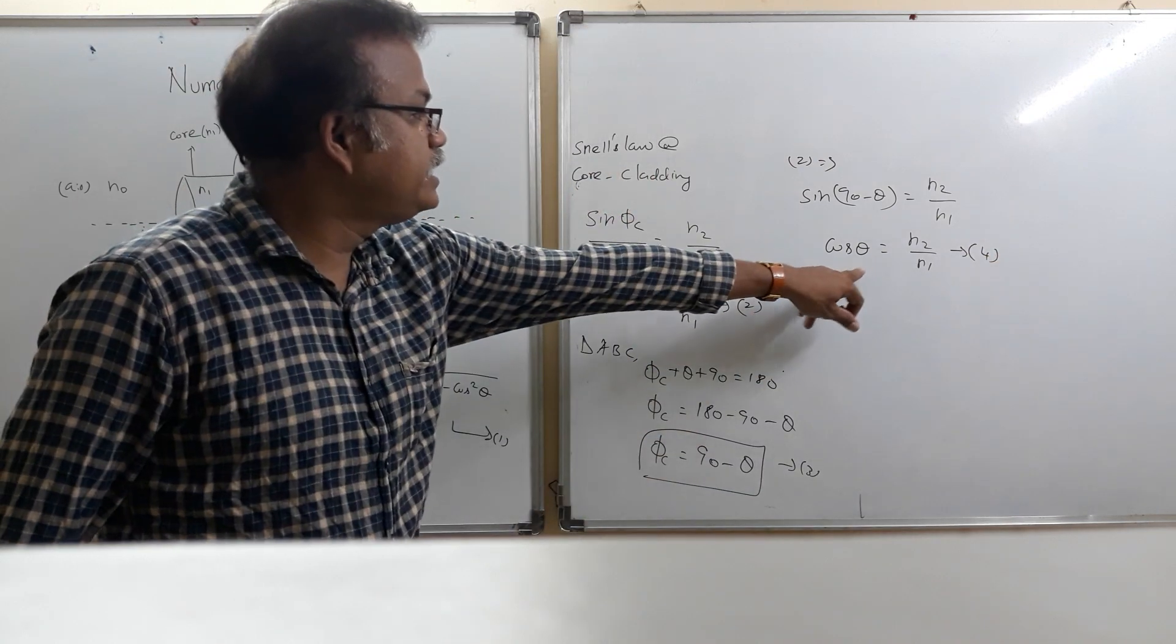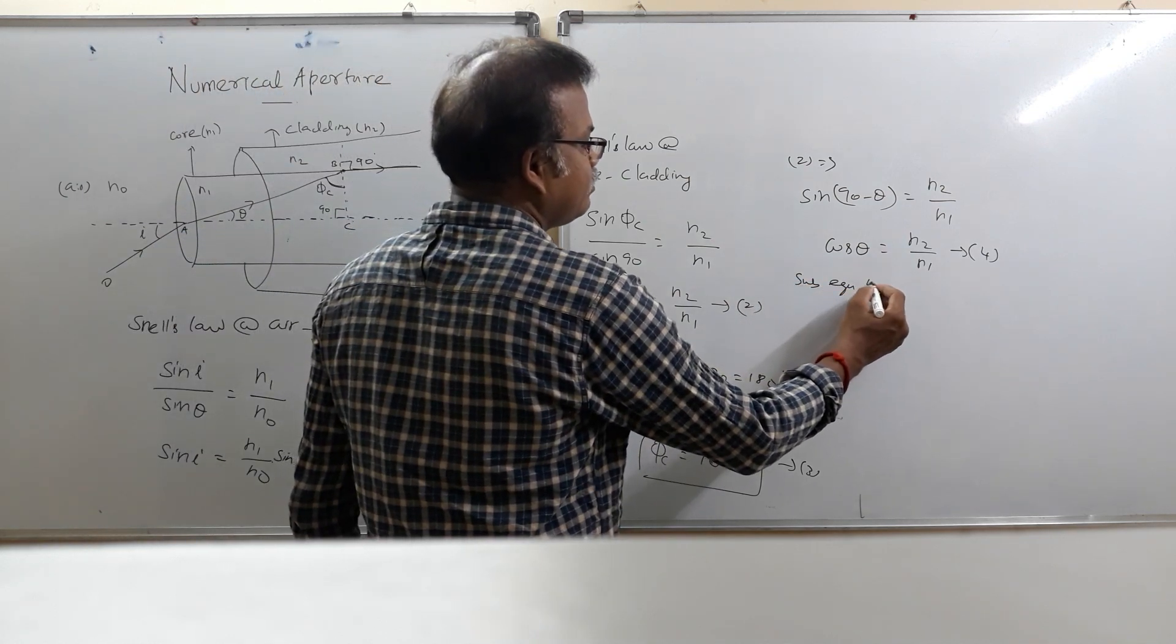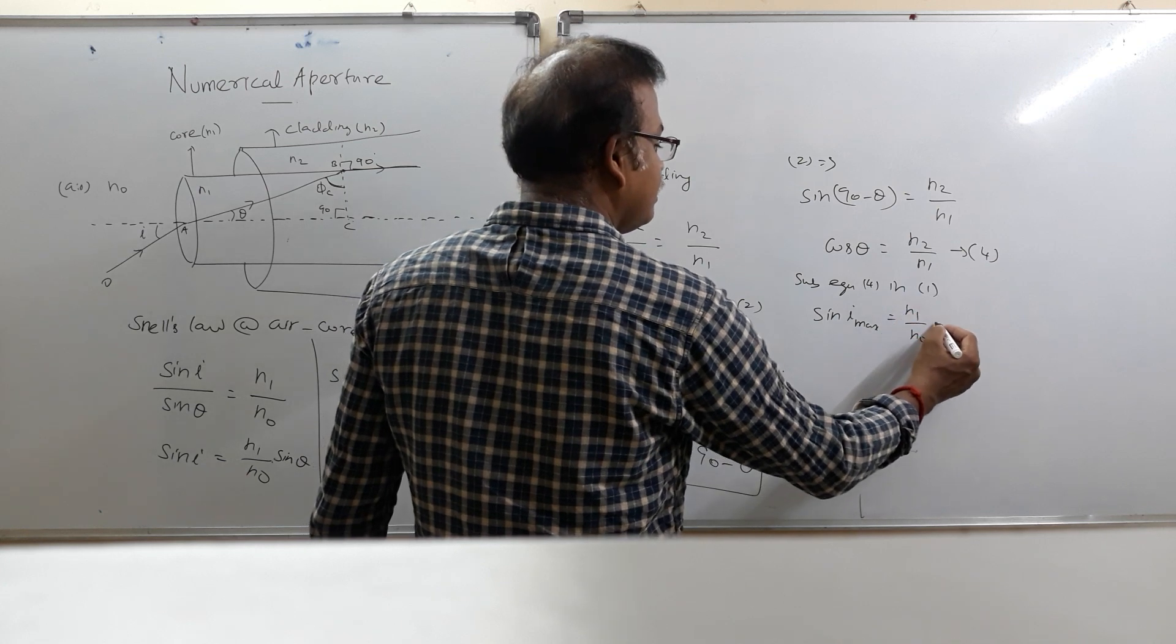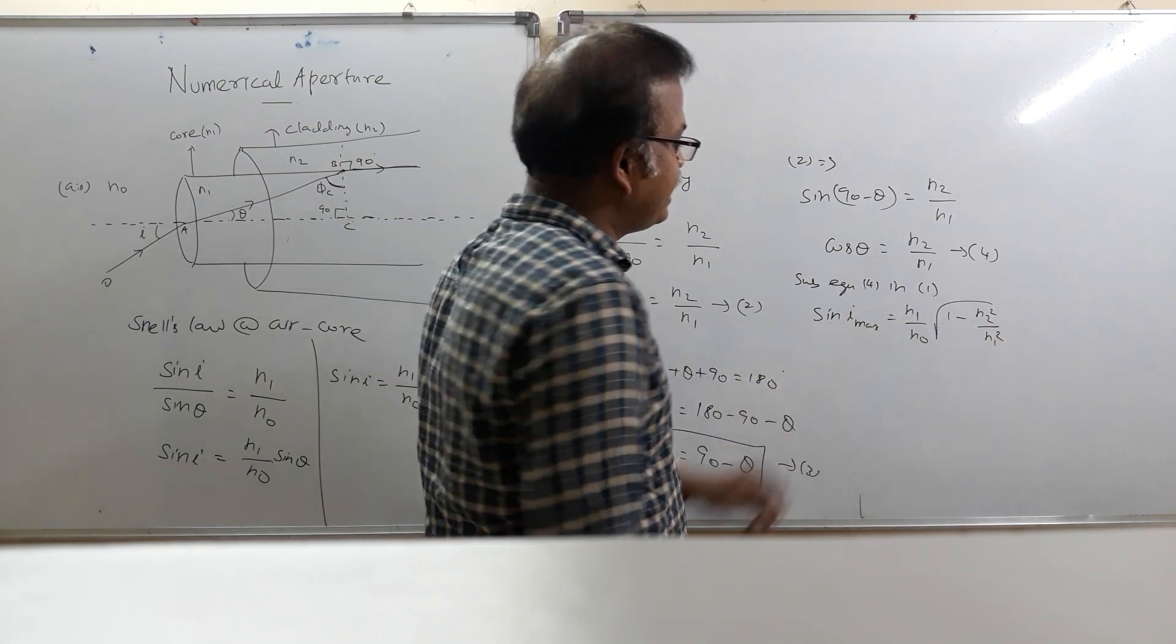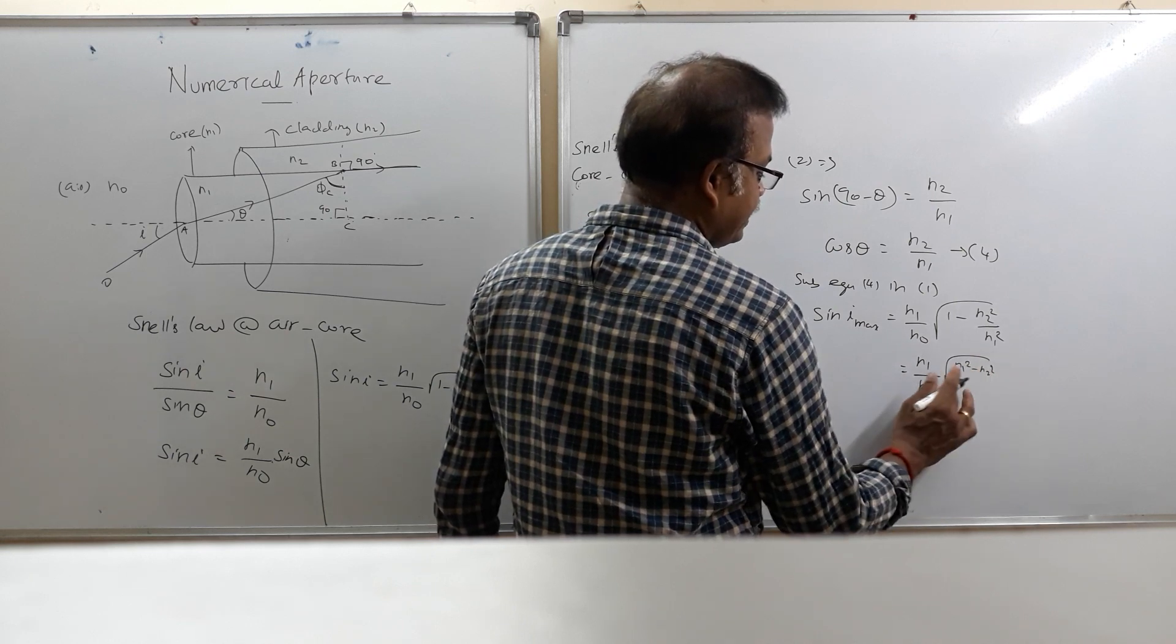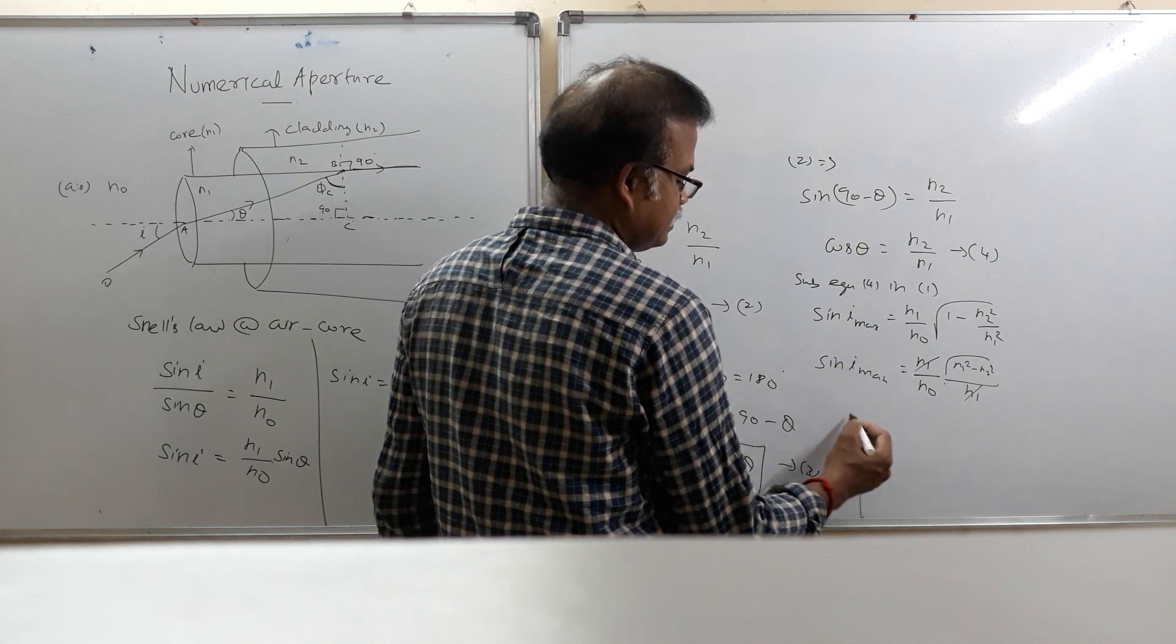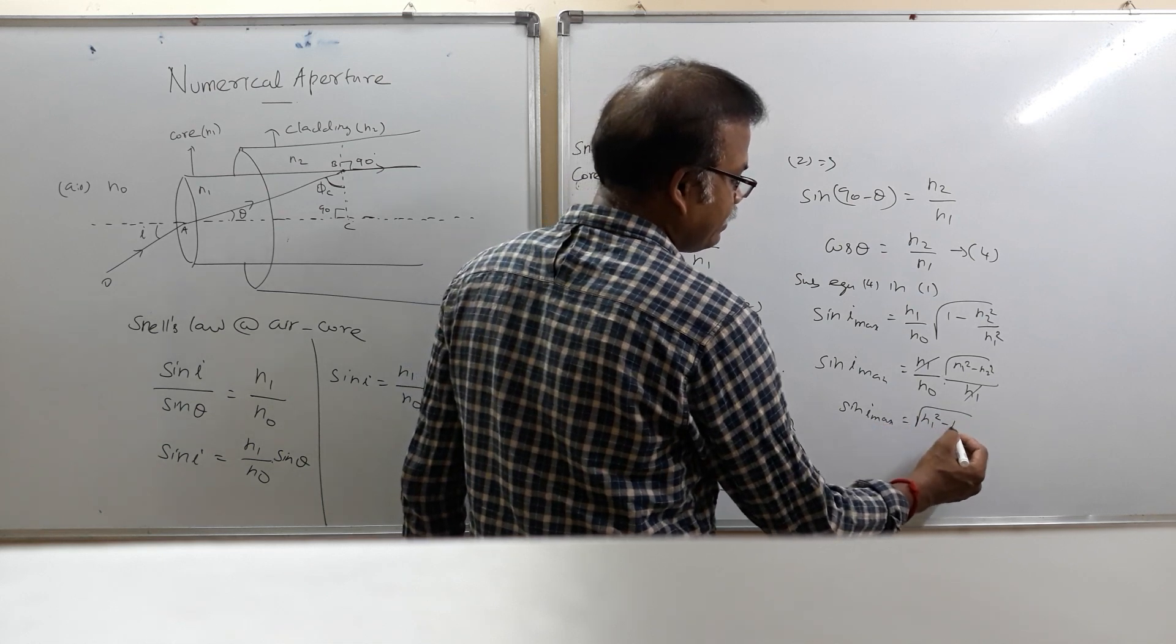Now, you use equation 4 in equation number 1 by substituting equation 4 in equation 1. We get, sine i max is equal to N1 by N0 root of 1 minus N2 squared by N1 squared. When you take LCM, it is N1 by N0 root of N1 squared minus N2 squared divided by N1. N1, N1 cancel. So sine i max is equal to root of N1 squared minus N2 squared.